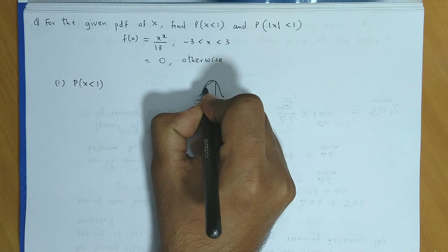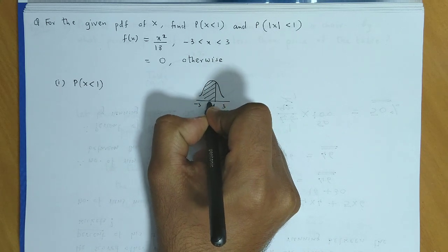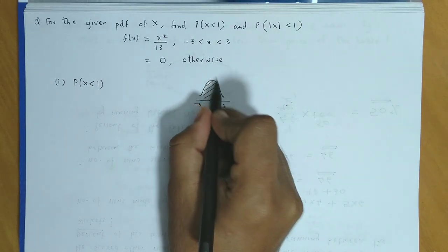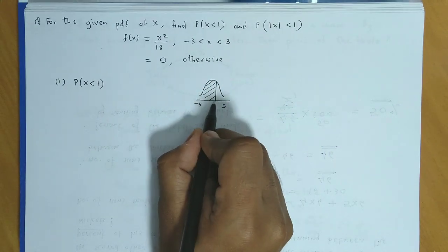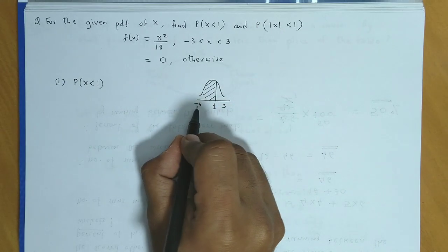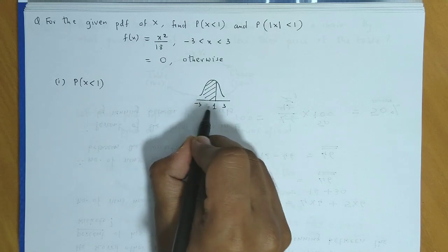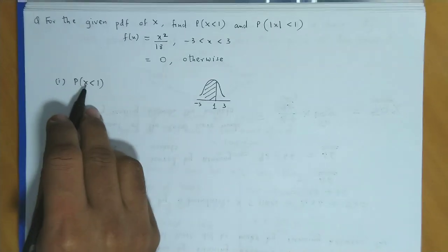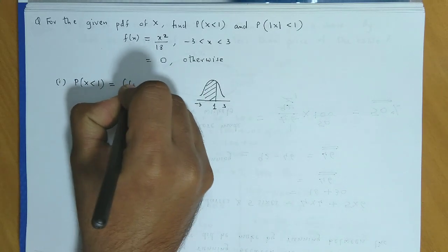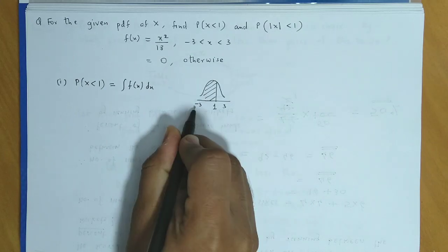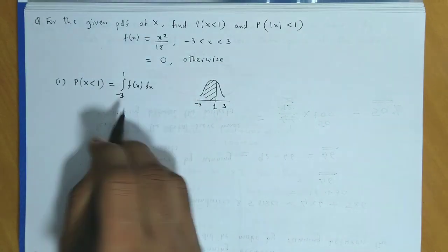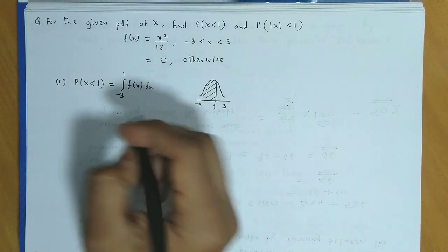So we have to obtain this region. We know the complete area is 1, but we don't need complete probability. We have to find less than 1 probability. We integrate from minus 3 to 1. So probability of X less than 1 will be integration of f(x) from minus 3 to 1.